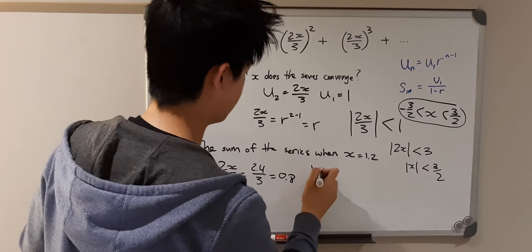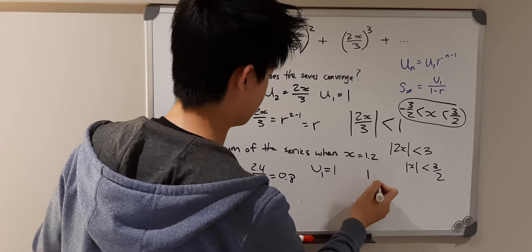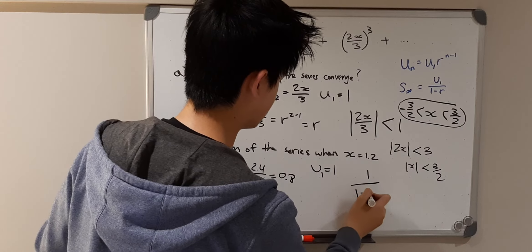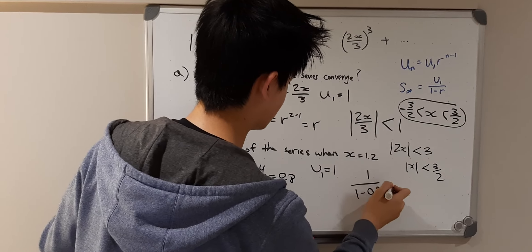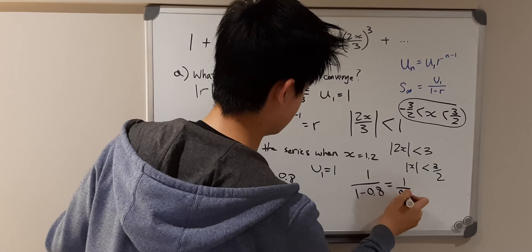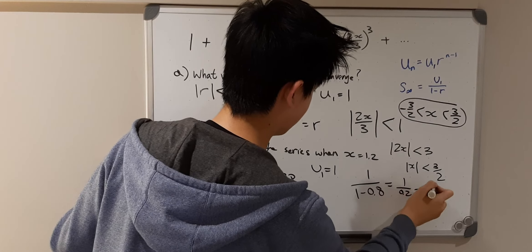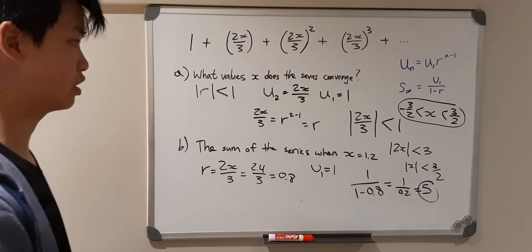And then we know that u1 is equal to 1. So 1 over 1 minus 0.8, well that's equal to 1 over 0.2, and that is equal to 5. And that is the answer to the second question.